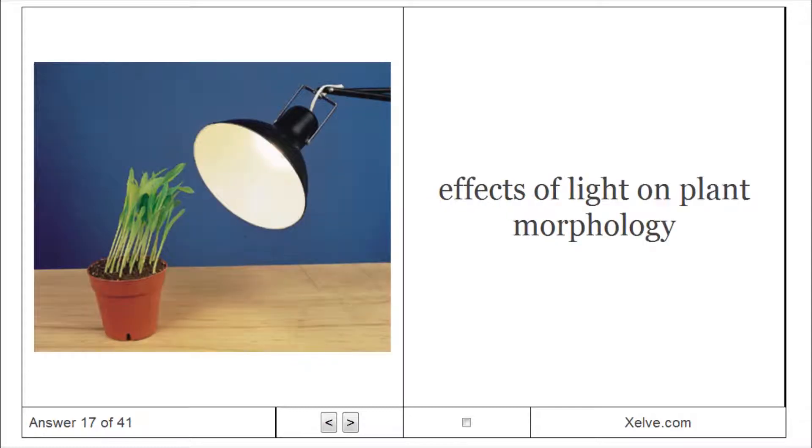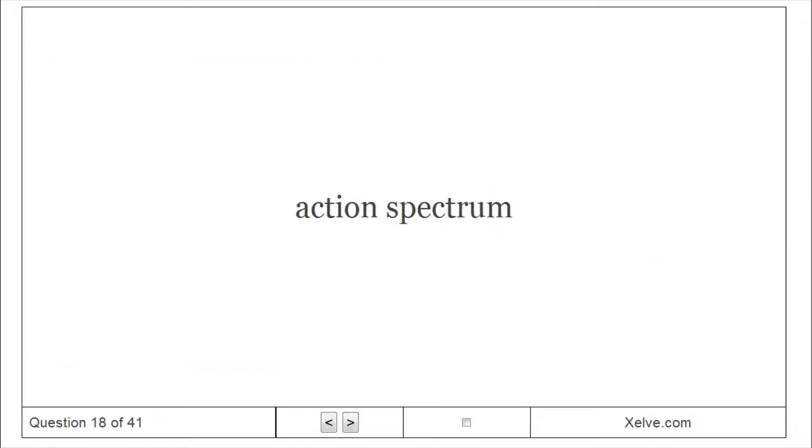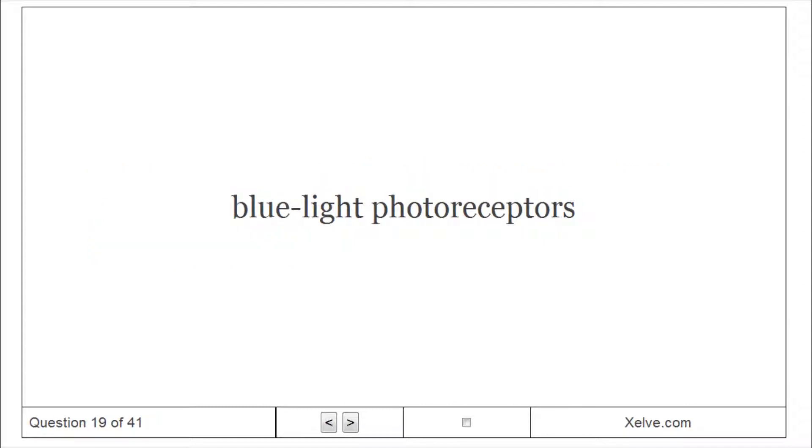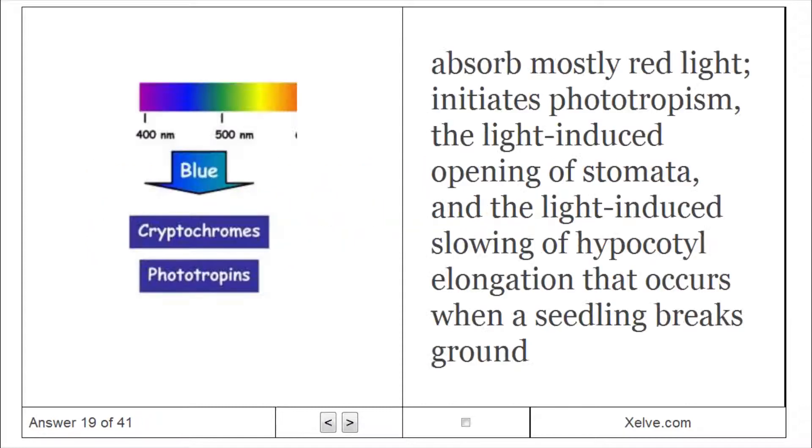Photomorphogenesis: effects of light on plant morphology. Action spectrum depicts the relative effectiveness of different wavelengths of radiation in driving a particular process. Blue light photoreceptors absorb mostly red light, initiating phototropism, the light-induced opening of stomata, and the light-induced slowing of hypocotyl elongation that occurs when a seedling breaks ground.